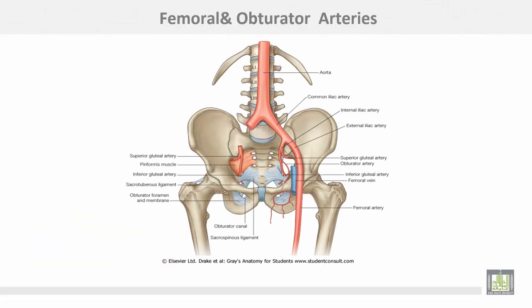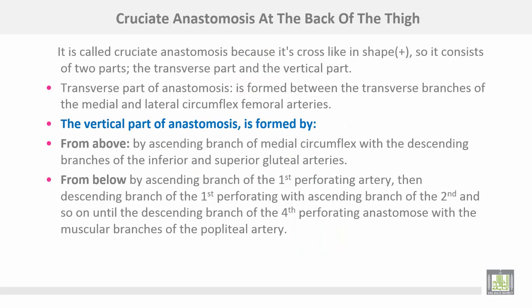This is the external iliac artery, which continues downward behind the inguinal ligament to become the femoral artery. It descends in the femoral triangle and in the adductor canal.